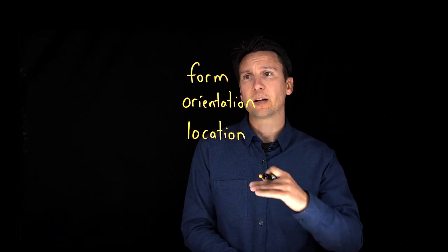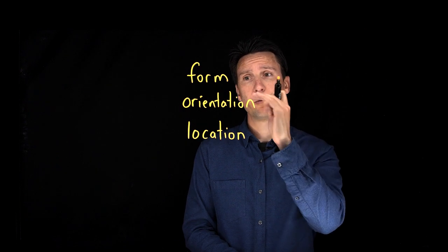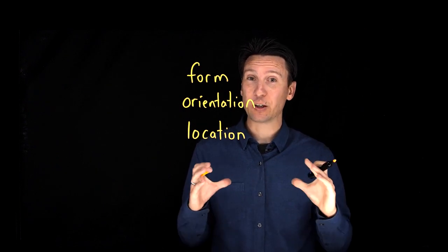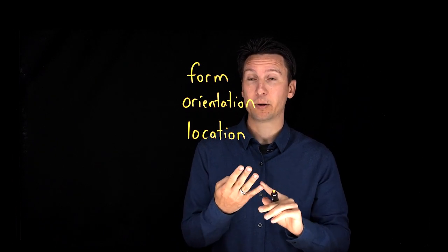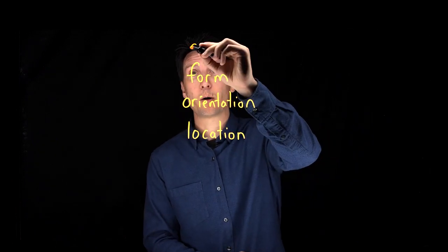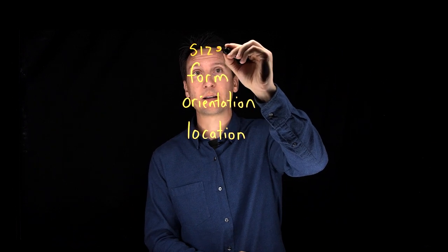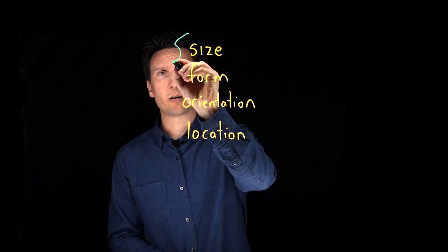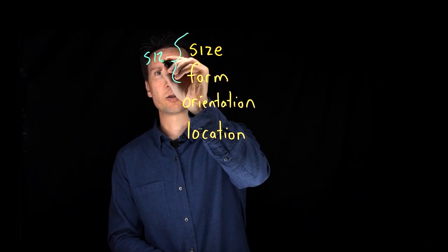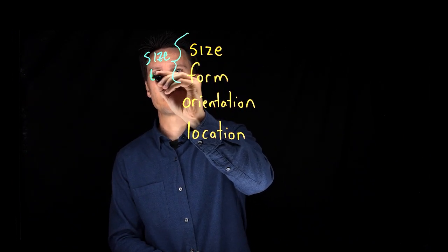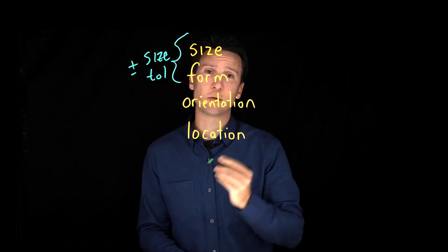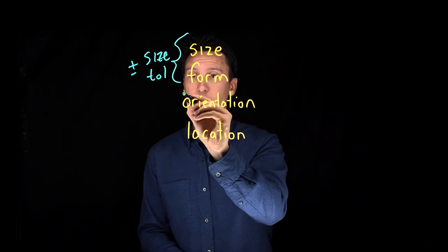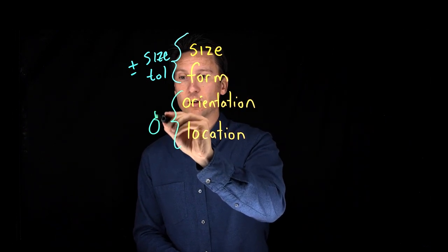So remember that surfaces they can vary in three ways form orientation and location but if you have a feature of size like a hole, slot, tab or pin then they can vary in one more and that's size. So when we put a size tolerance on here we know that size tolerance just a plain old plus or minus tolerance is going to control size and form through rule number one. So we need to control its orientation location so we use position tolerance to do that.